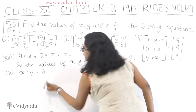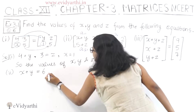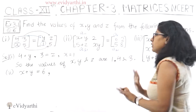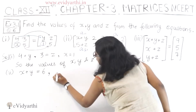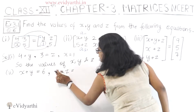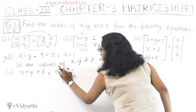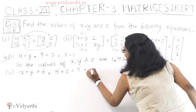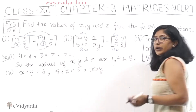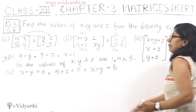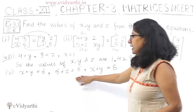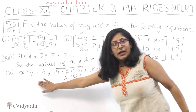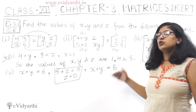If 5 plus z is equal to 5, then z comes to 0. We have written this last thing — x into y is equal to 8. Now we have to calculate values. Z is equal to 0 — let us note that. We have to calculate this part: x plus y is equal to 6, and x into y is equal to 8.